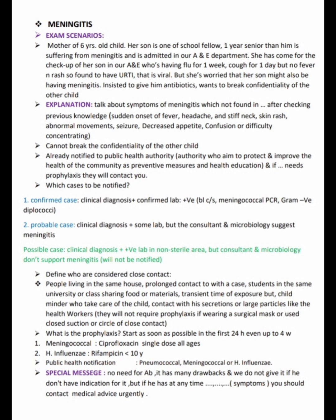The mother can be asked: who are the close contact persons who should take preventive prophylaxis? Close contacts are defined as: people living in the same house, prolonged contact with a case, students in the same university or class, sharing food or materials. However, a child minder who takes care of the child, or health workers who had contact with secretions while wearing a surgical mask or using closed suction, do not require prophylaxis.